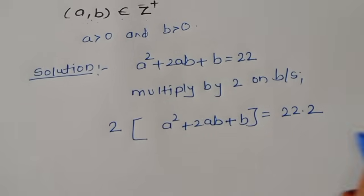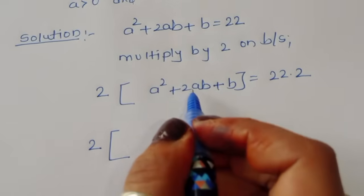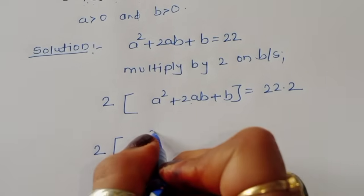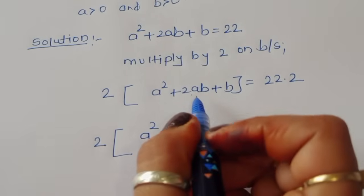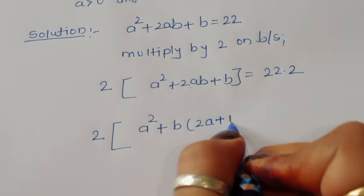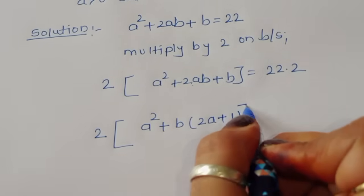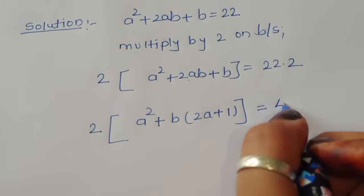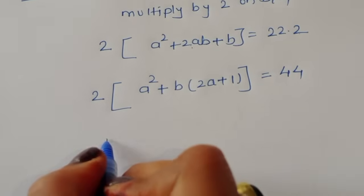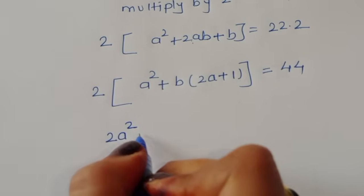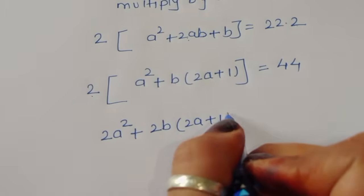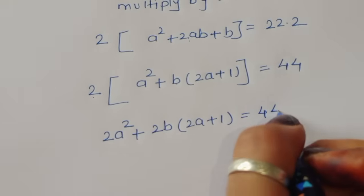Now, 2(a² + 2ab + b). We can take a² common and b common, giving us a²(2) + b(2a + 1). Expanding: 2a² + 2b(2a + 1) = 44.